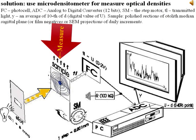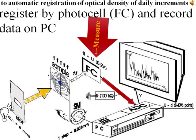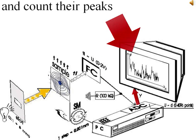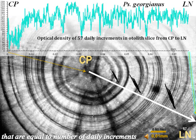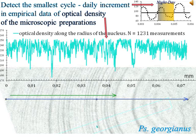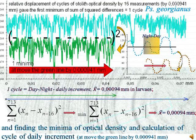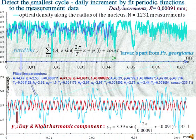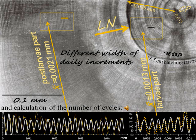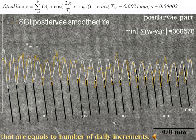Solution: Use a microdensitometer to measure optical densities for automatic registration of the optical density of daily increments and count daily peaks that are equal to the number of daily increments. Detect the smallest cycle of daily increments in empirical data of optical density from microscopic preparations, by assuming two sets of measurements moved relative to each other and finding the minima of optical densities and calculating cycles. Also detect the smallest cycle by feeding periodic functions to the measurement data and calculating the number of cycles equal to the number of daily increments.